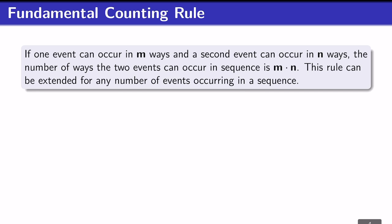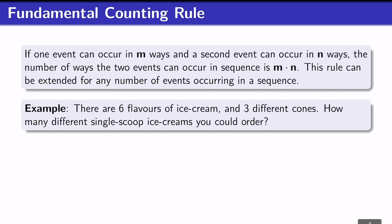All combinatorial formulas are based on the fundamental counting rule, which tells you that if one event can happen in m different ways and another can happen in n different ways, then altogether these two events can occur in m times n ways in sequence.